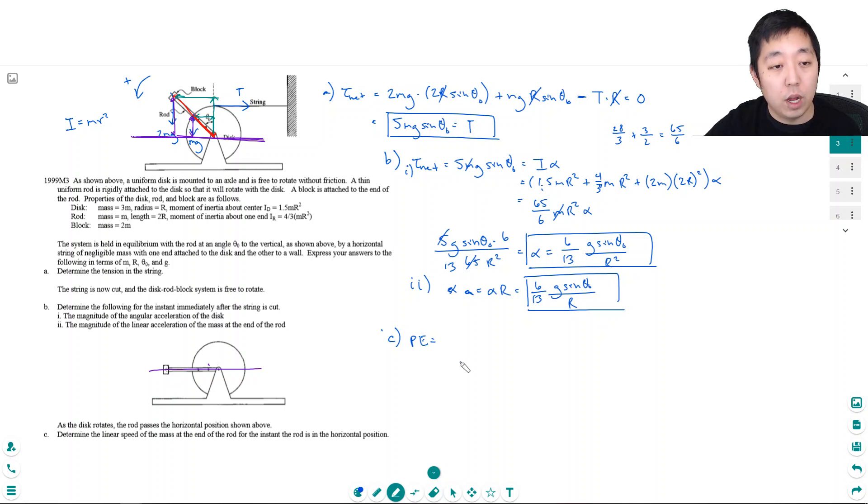So initially the potential energy is just MGH. So the potential energy of the rod is its mass M times G times its height. If this is R and this is theta, so this distance is R cosine theta naught. And then the potential energy of this block is 2M, that's its mass, times G times 2R cosine theta naught. Because his distance is higher up, this is 2R cosine theta naught because this is 2R away. And so that gives me a total of 5M G R cosine theta naught. This is how much potential energy that he has initially.